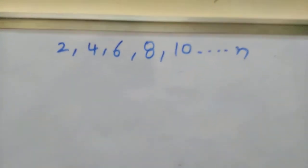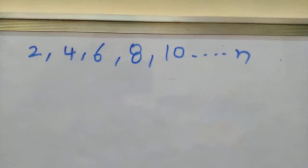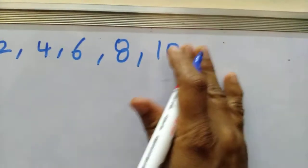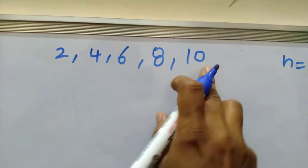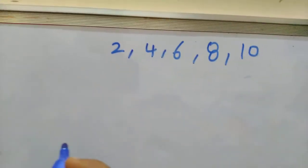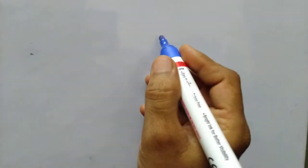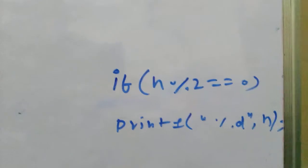Today we will discuss how to find even numbers in a given range. For example, if the n value is 10, we have to find even numbers up to 10, in the range of 10. First, we have to write a logic for how to find an even number.